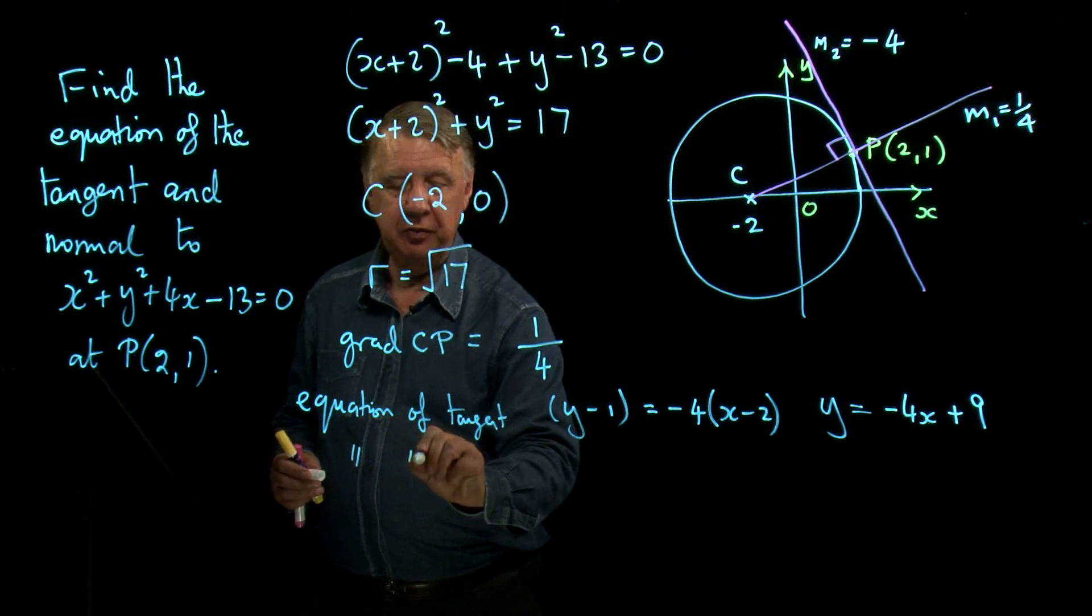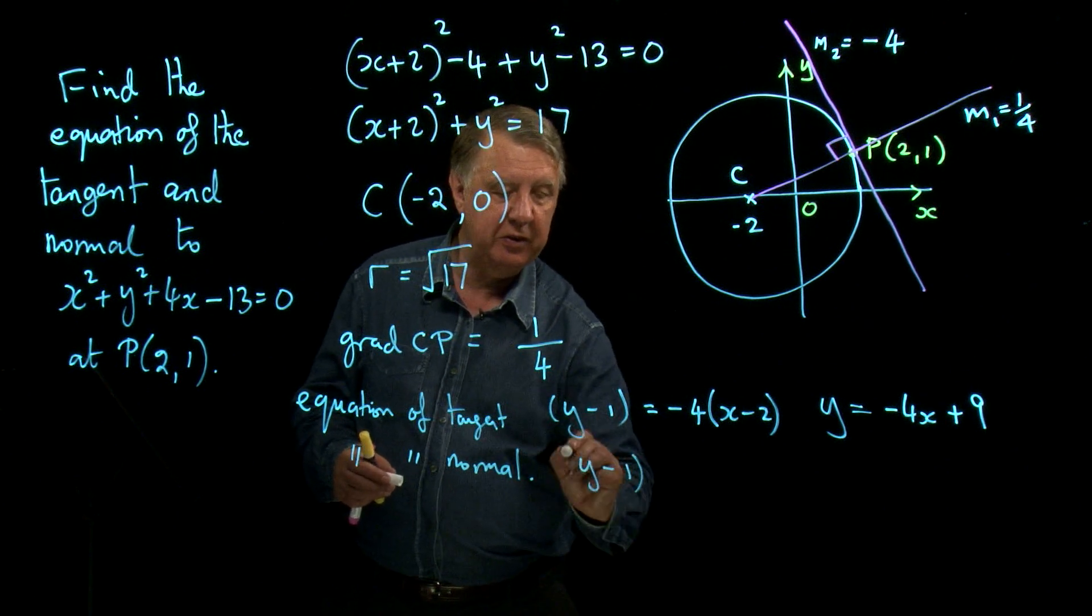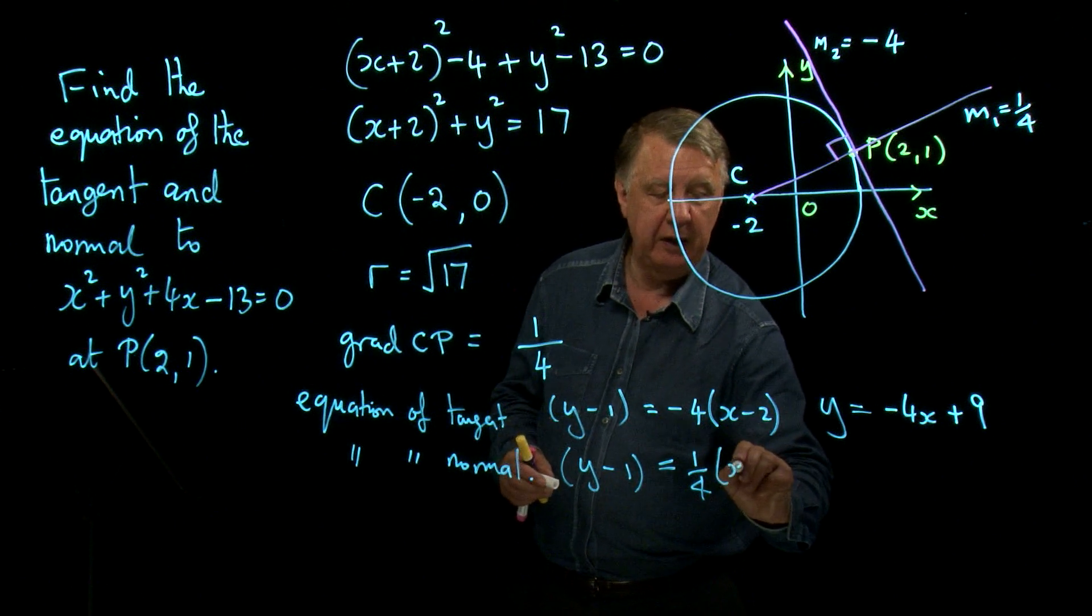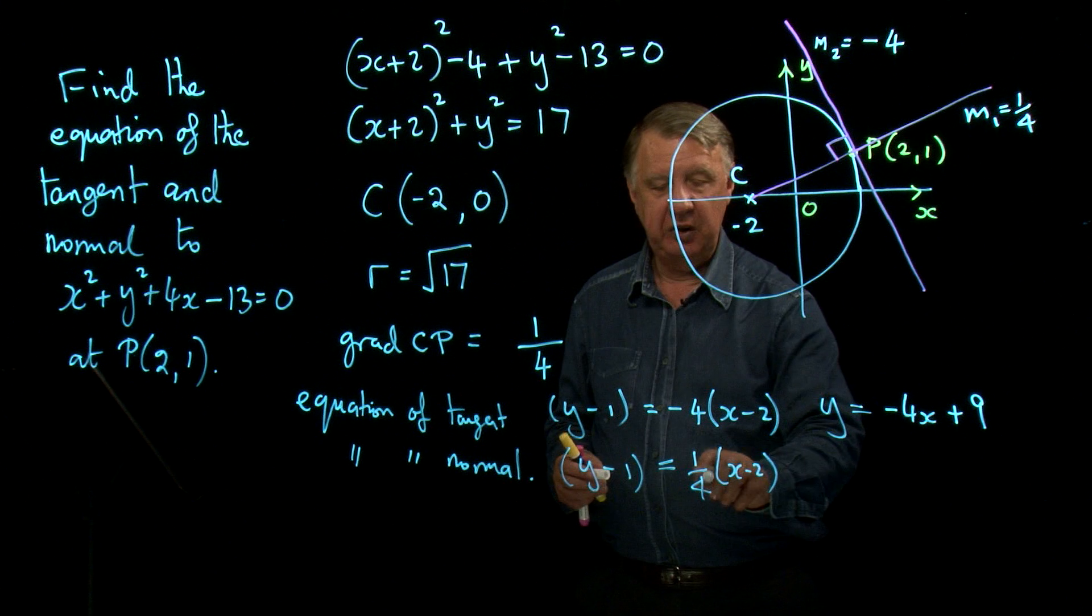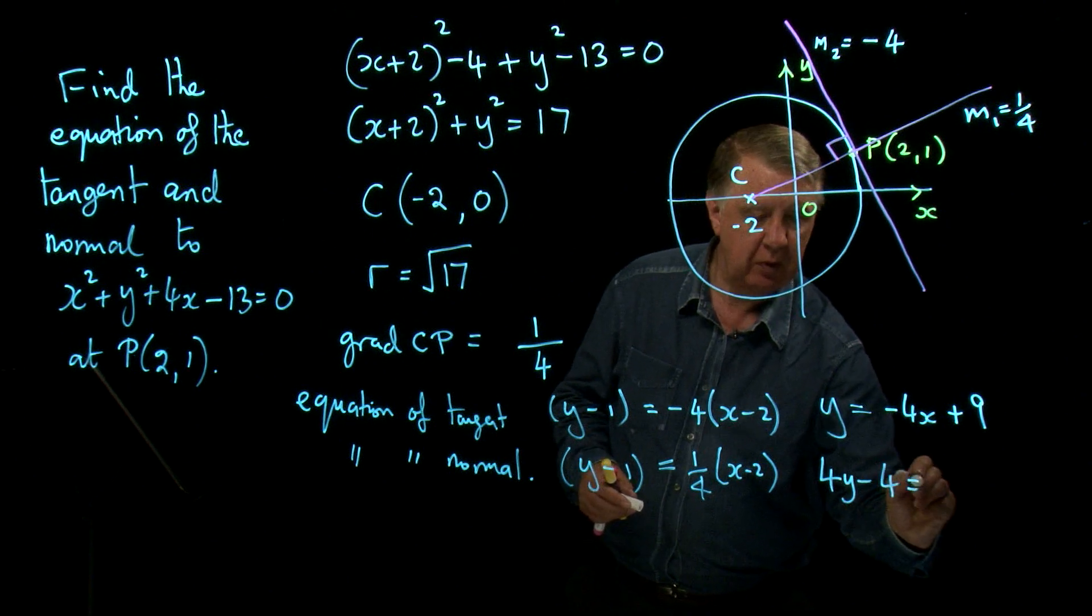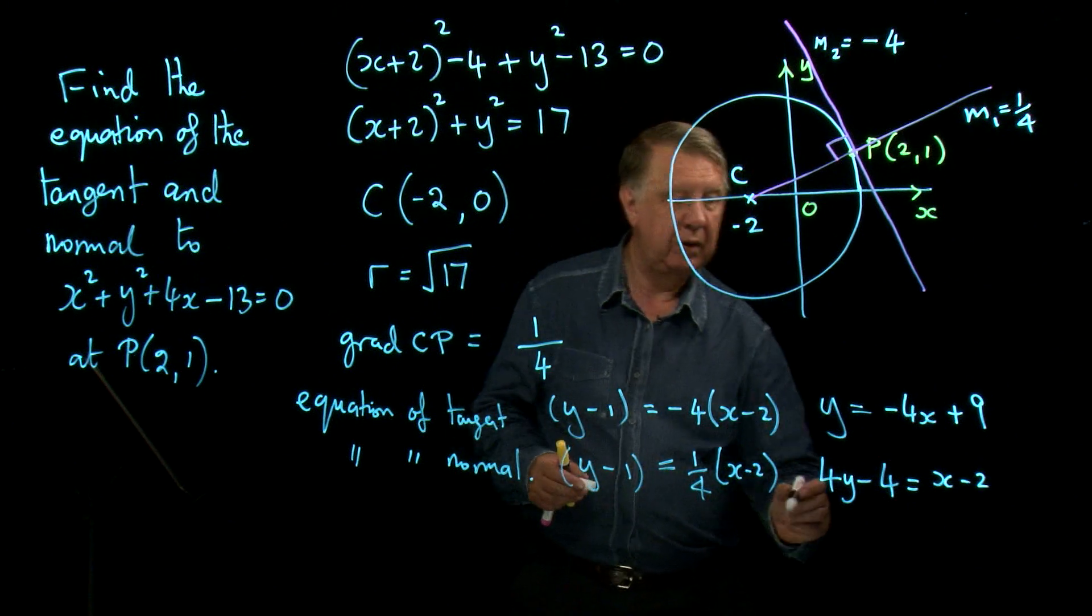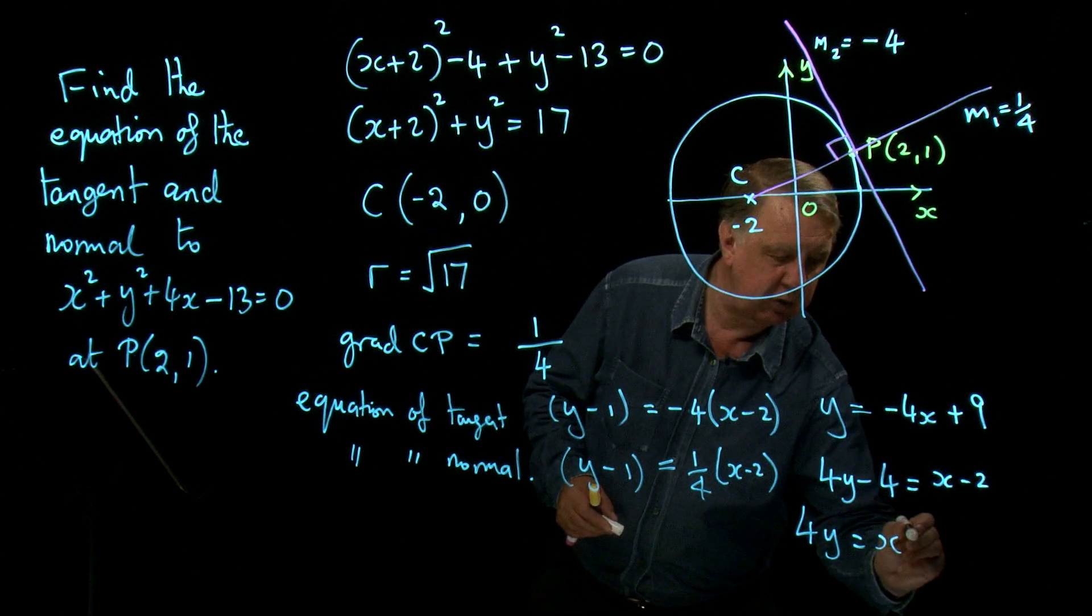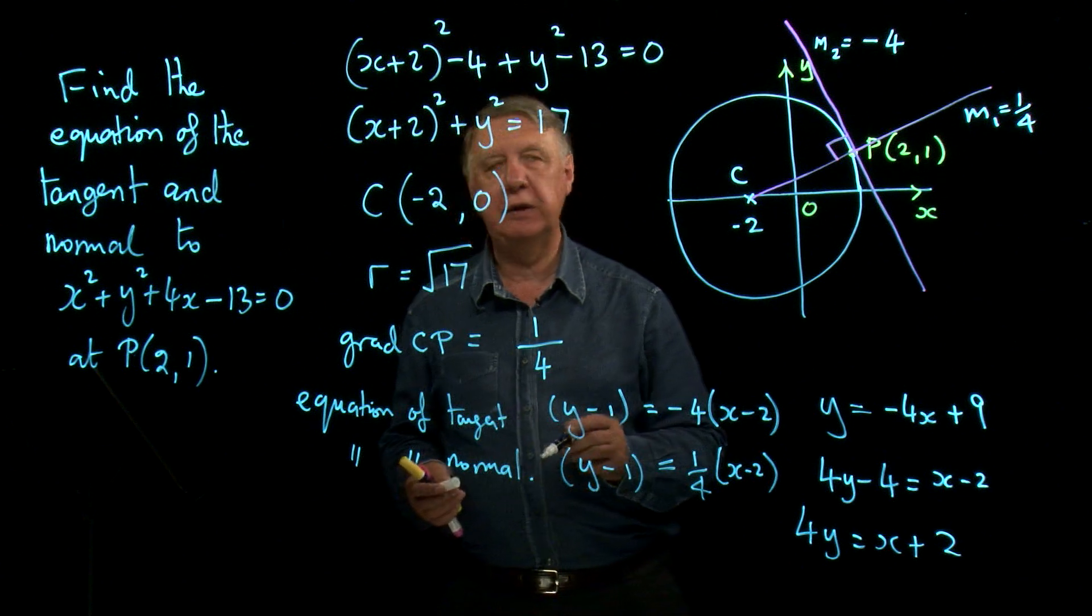And the equation of the normal, still y minus 1 because it's the same point. The only difference is of course is my gradient is a quarter, x minus 2. And so remember the trick. We don't like this here. 4 times the other side is 4y minus 4 equals x minus 2. And so we can tidy that one up. 4y equals x, and that's going to be plus 4 take 2 is plus 2. And so there you have the equation of the tangent and the normal.